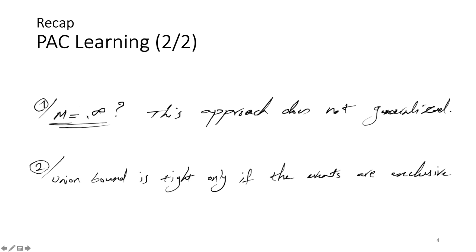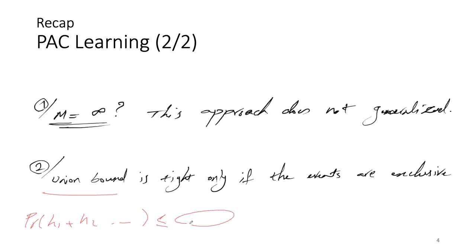When M is infinite, the union bound approach does not generalize. The union bound was the case where we added the probabilities — H1 plus H2 plus all of them — and multiplied by M. This bound is only tight if the events are mutually exclusive.